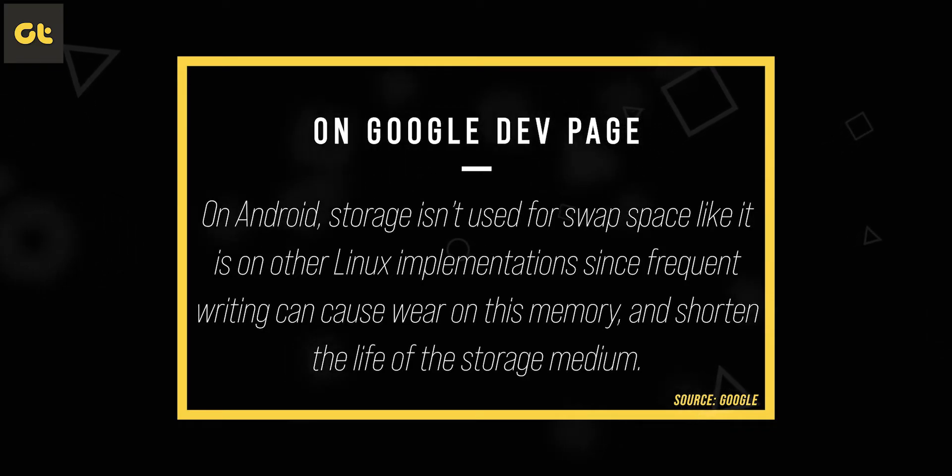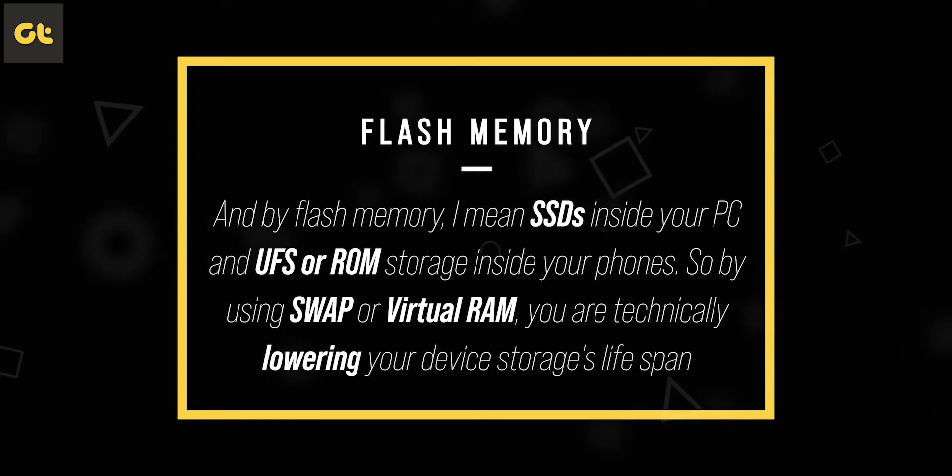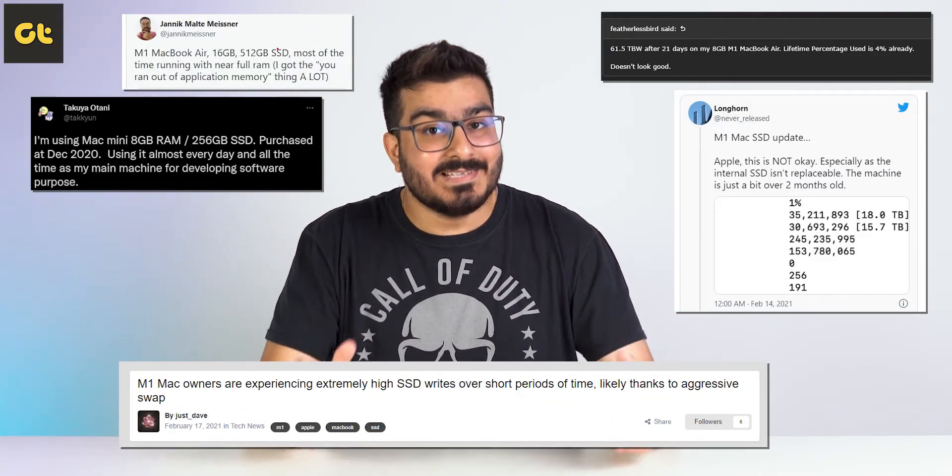Google states that frequent writing can cause wear on memory and shorten the life of the storage medium. Even with UFS storage, it's still flash memory. Swap partitions involve a lot of reading and writing of hibernated apps, causing significant wear and tear on flash memory — whether that's SSDs in PCs or UFS storage in phones. Using swap or virtual RAM technically lowers your device storage's lifespan. Check out the news around Apple MacBook laptops, with users complaining about swap partitions slowing down their SSDs — and that's on desktop-grade SSDs. It'll deteriorate UFS storage in your phone to a much greater extent.